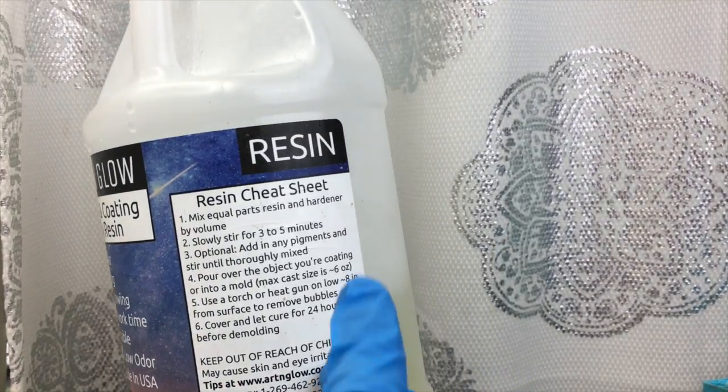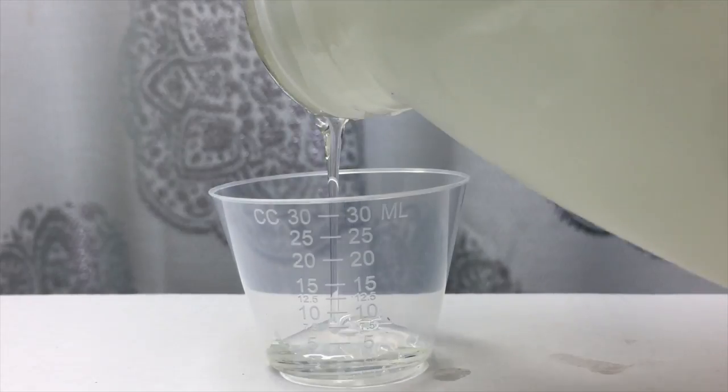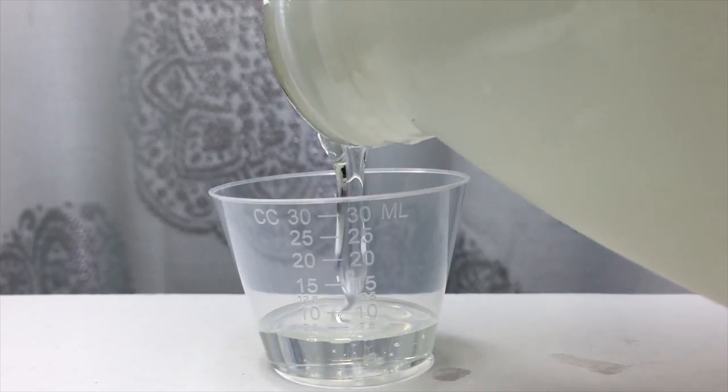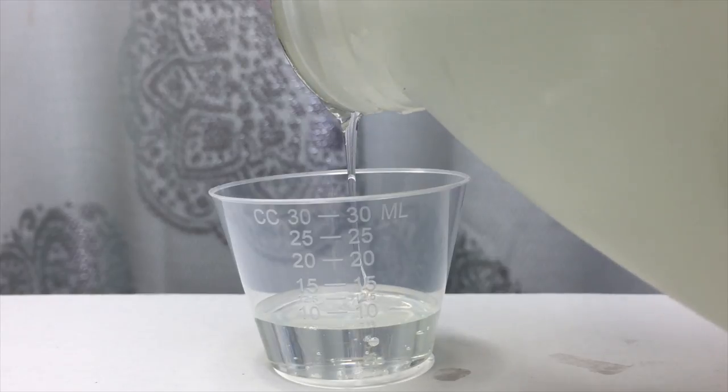Now I'm going to get started mixing my one to one ratio resin. So you can see I am pouring in the resin first and I'm going to pour 10 milliliters and then I'm going to go in with the hardener and I'm also going to pour in 10 milliliters.